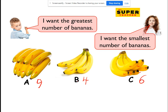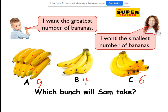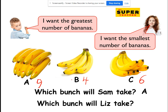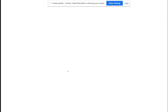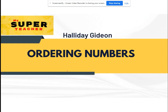So which is the smallest? And which is the greatest? What would Sam get? Which bunch will Sam take? Sam gets bunch A, because that's the biggest. And which bunch will Ann take? Bunch B. Good job! Thank you so much. Next, we're going to continue with ordering of numbers. Good job!